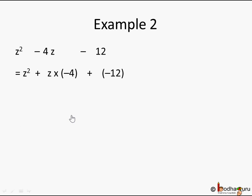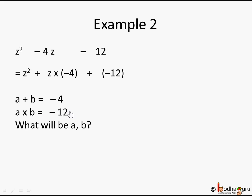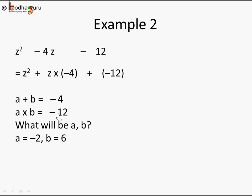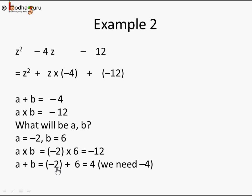Let's try another pair. Since the product is minus 12, it must come from one positive and one negative number — if both are negative or both positive the product would be positive. So let's try minus 2 and 6. Then a×b = minus 2 × 6 = minus 12, which is correct! But a+b = minus 2 + 6 = plus 4, whereas we need minus 4. So this doesn't work either. What if we try 2 and minus 6?